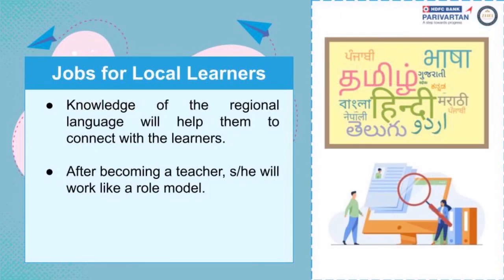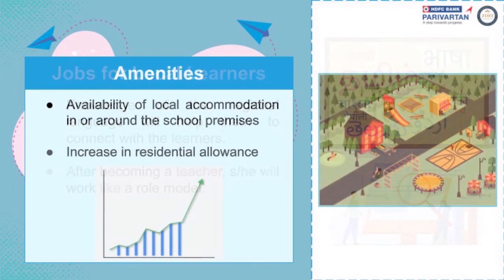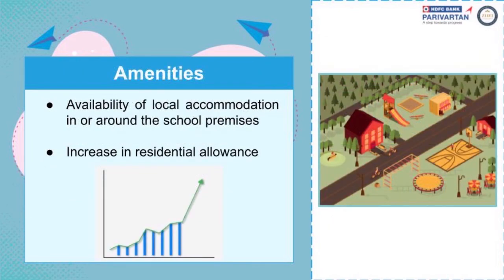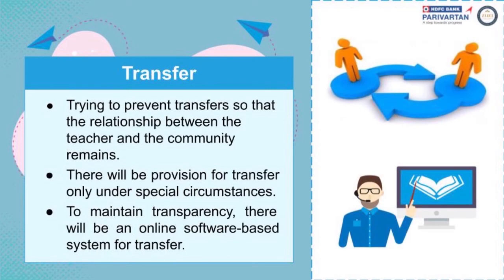For local learners, knowledge of the regional language will help them connect with learners, and after becoming a teacher, she will work as a role model. Amenities such as availability of local accommodation in or around the school premises and an increase in residential allowance are also addressed. NEP tries to prevent transfers so that the relationship between the teacher and the community remains intact. Transfer will be allowed only under special circumstances, and for transparency, there will be an online software-based system for transfers.